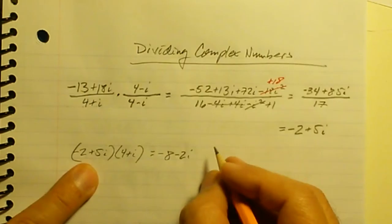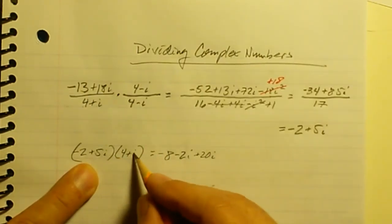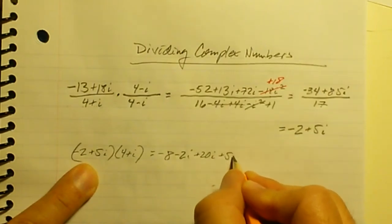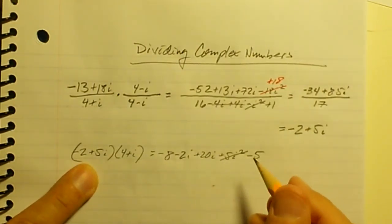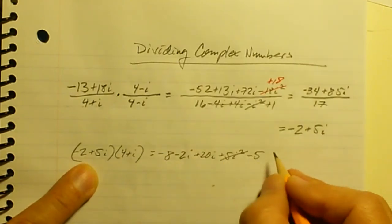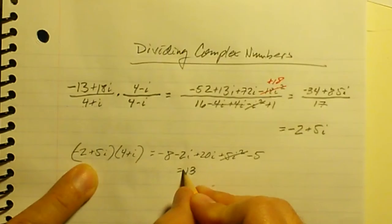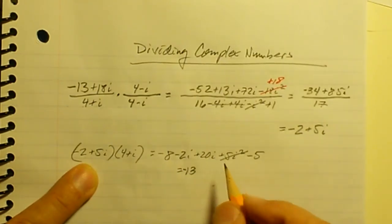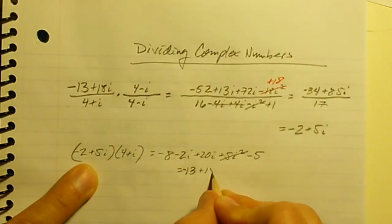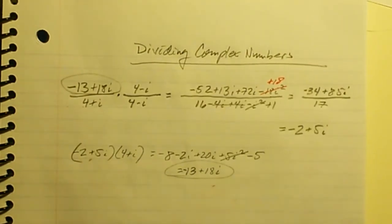Negative 2 times 4 is negative 8, negative 2 times i is minus 2i, 5i times 4 is plus 20i, and 5i times i is plus 5i squared, which is minus 5. So we have negative 8 minus 5, which is negative 13, and negative 2i plus 20i, which is plus 18i. That gives us negative 13 plus 18i — it checks out!